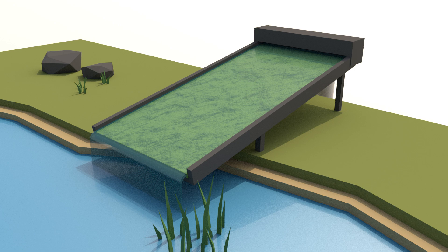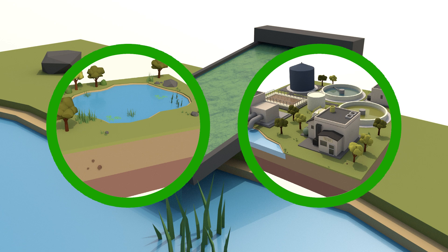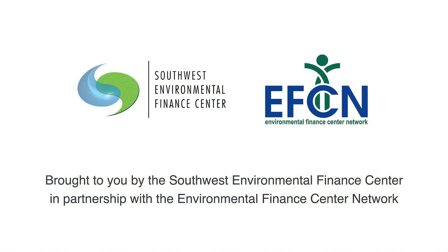Algal turf scrubbers can be used to treat water flowing into water bodies or as part of the wastewater treatment process, helping to preserve the health of our water bodies.